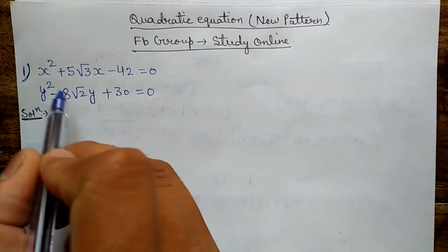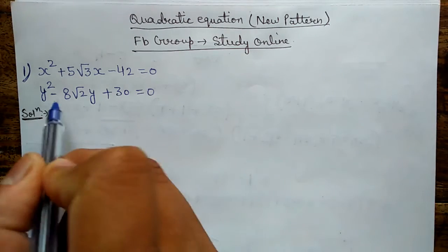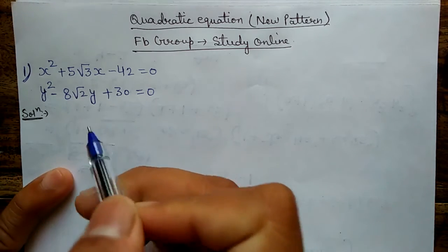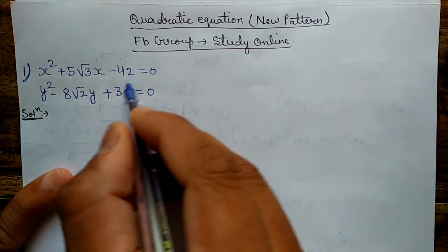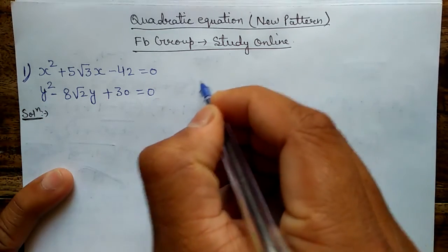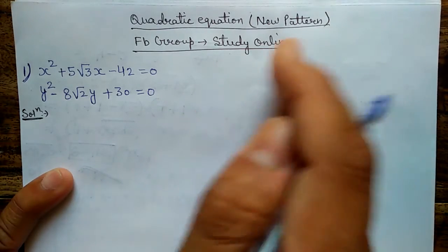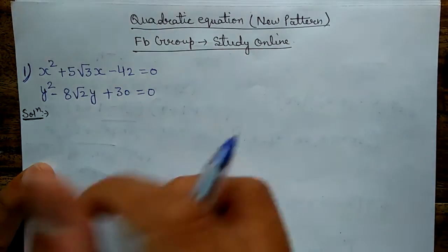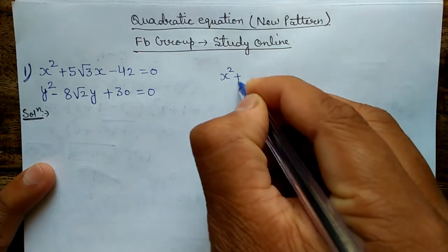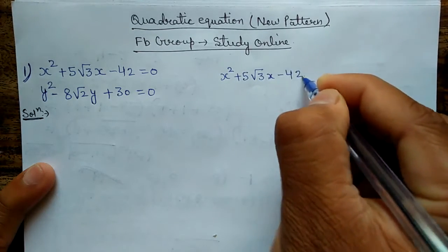The first question given is x² + 5√3·x − 42 = 0, and y² − 8√2·y + 30 = 0. So how will we find the roots of these equations? I am solving one equation on this side and the other equation on this side.